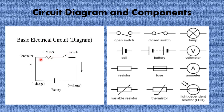This is how you draw a basic electric circuit diagram. The straight line represents the wire, and the arrow shows the direction of electron flow. The components include the conductor (wire), the resistor, the switch, and the battery or cell. Other components that can be added include the open switch, closed switch, lamp, voltmeter, ammeter, fuse, and resistor.